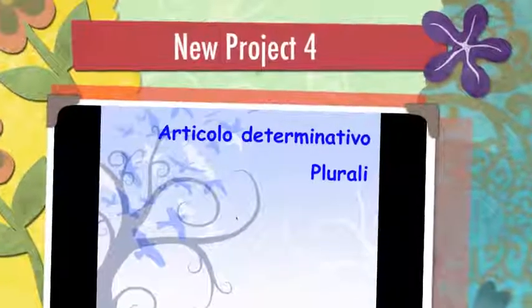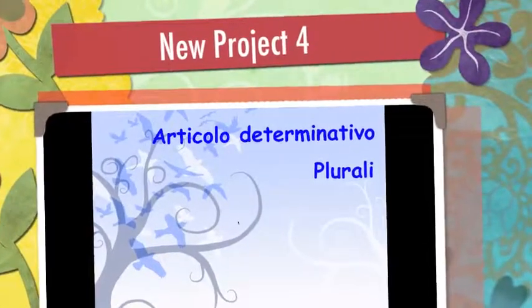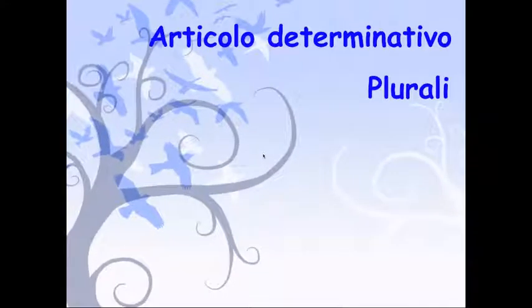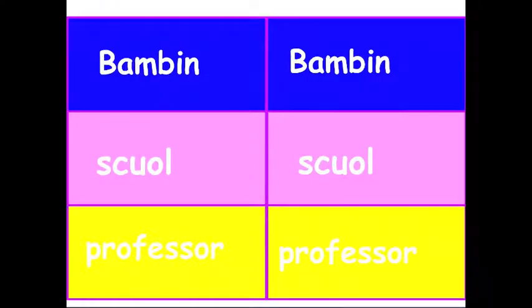Ciao ragazzi! Adesso parliamo dell'articolo determinativo e dei plurali. So, the definite article, which in English is 'the,' and the plurals, really quickly. So first thing, how do you make a plural in Italian?